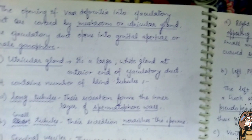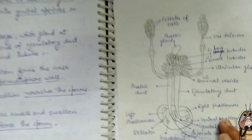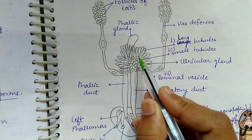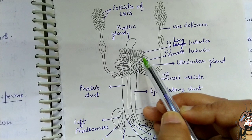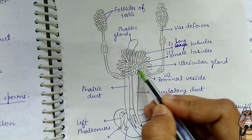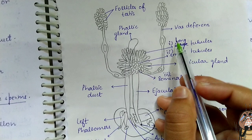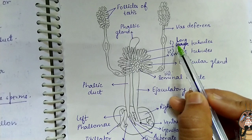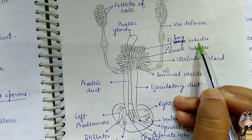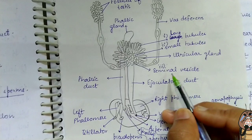The utricular gland is a large white gland at the anterior end of the ejaculatory duct. It contains three types of blind tubules: long tubules, short tubules, and seminal vesicles. Long tubules form the inner layer of the spermatophore wall. Short tubules function to nourish the sperms. Seminal vesicles are small and swollen and store the sperm.